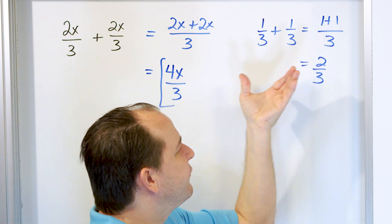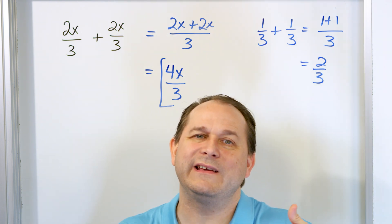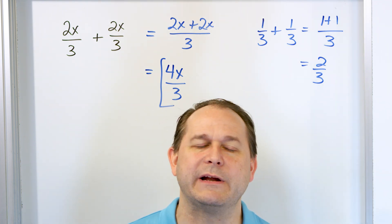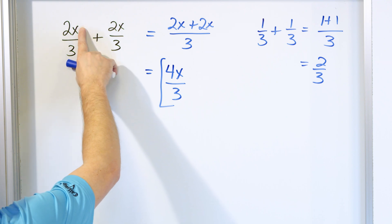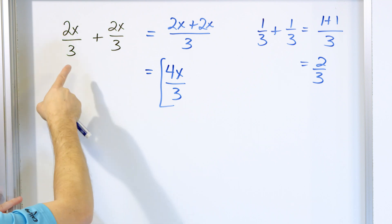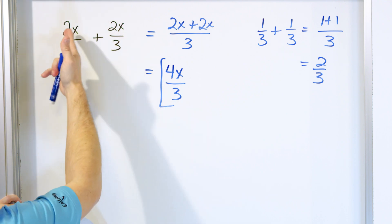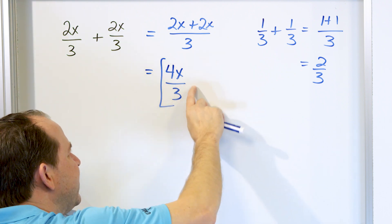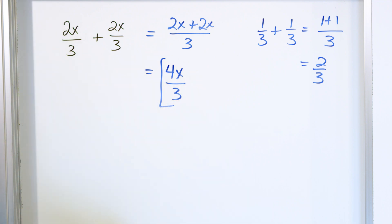Do you see the parallel? It follows directly from what you already know. You must have a common denominator. And this means if I pick x equal to five, this becomes ten-thirds plus ten-thirds, which equals twenty-thirds. But if I put five for x in the answer four x over three, five times four is twenty, giving twenty-thirds. So the answer predicts exactly what I would get for any value of x. That's why this is the answer.